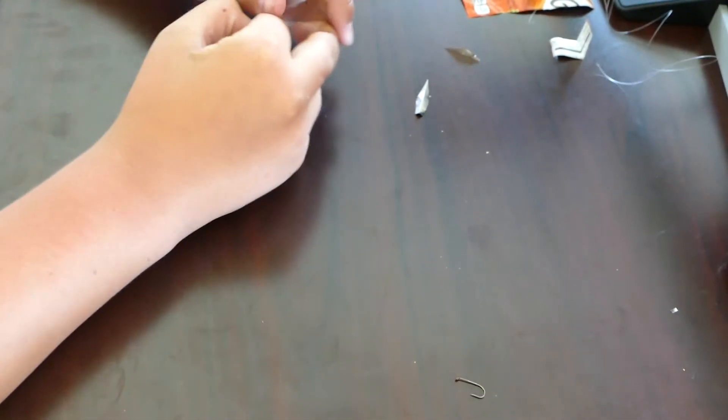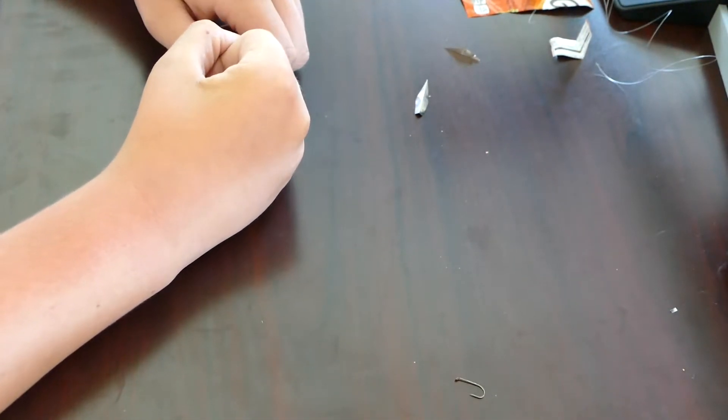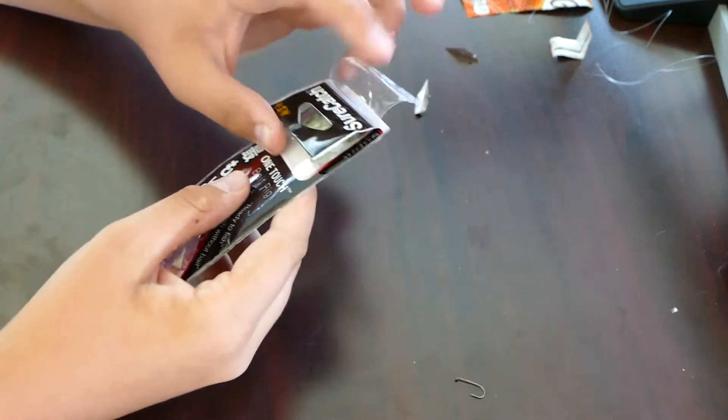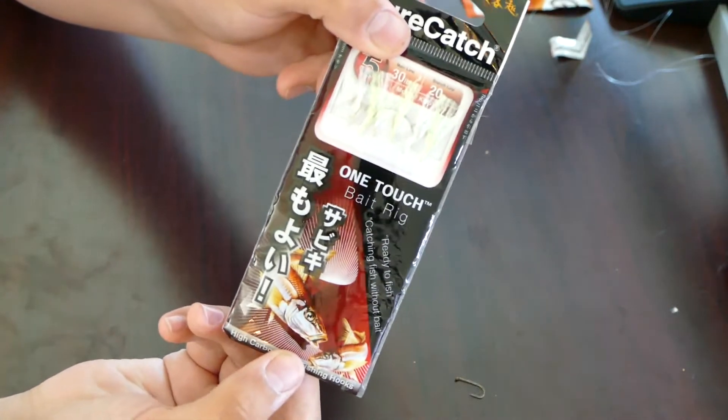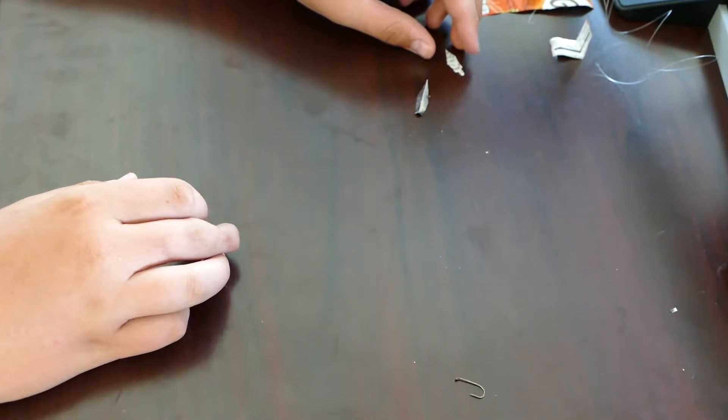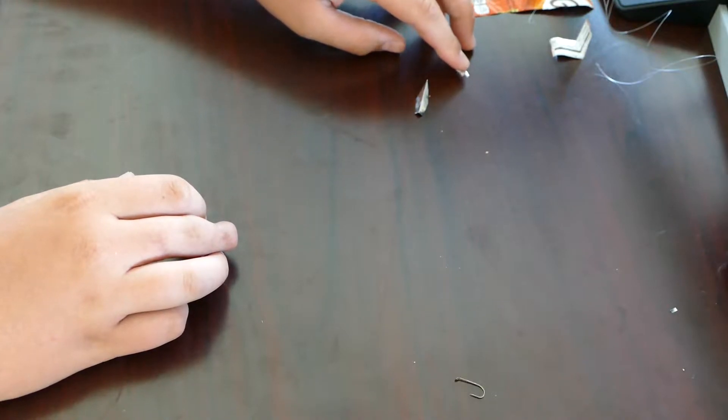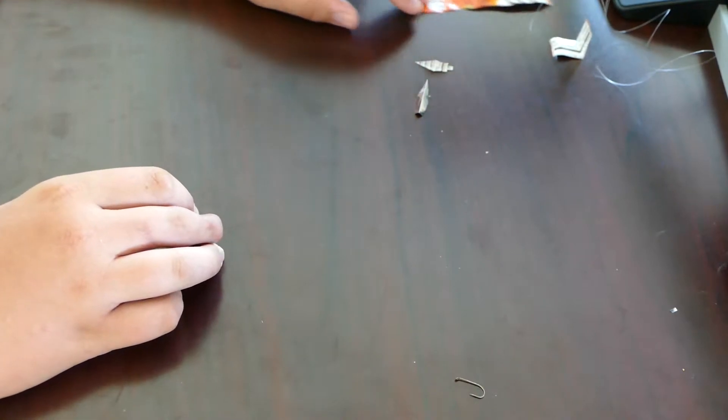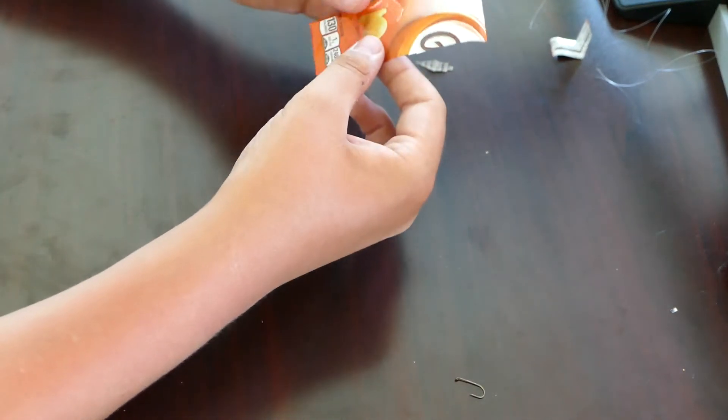Okay, so to make a sabiki rig, which is basically a rig with usually three or six small hooks all in a row. They're mostly used to catch baitfish where I live. You can use them to catch snapper or small bluefish. So I'll use a similar method to what I used in a previous video.